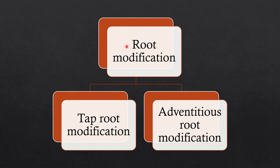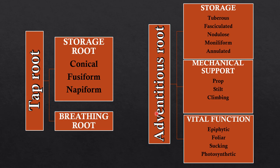This is a recapitulation of what we had done. Root modification can be broadly classified under two subheads: tap root modification and adventitious root modification. The modifications of adventitious roots can be classified under three subheads: storage, mechanical support, and vital function. Vital function is also known as specific function.